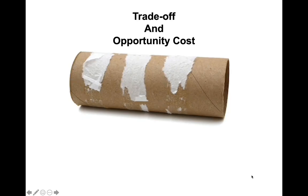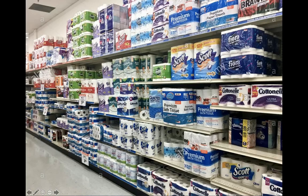I wanted to give you a quick example of the difference between trade-off and opportunity costs. So yesterday, I had to go to the store because we're almost out of toilet paper. What I saw shocked me — the store was packed with toilet paper. The sign said one pack of toilet paper per customer, so I was faced with an economic decision: how was I going to make a choice amongst scarce resources?